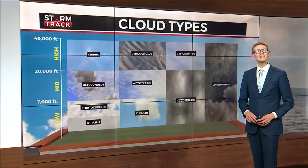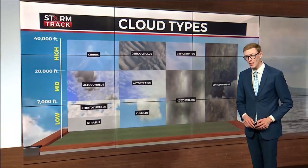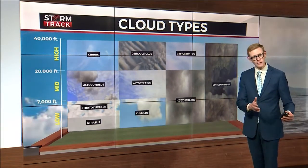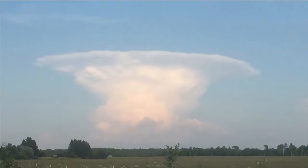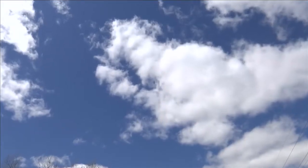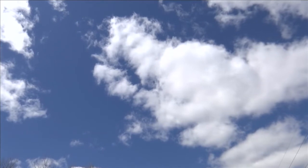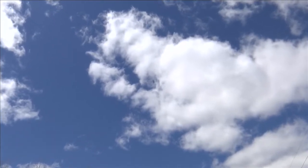There are 27 distinct classifications of clouds, but all of them fall into one of these 10 basic groups. So when you see a cloud that looks like a bunny or a dragon, what you're looking at is simply a cumulus cloud. It's a little anticlimactic, but cool to know, right?